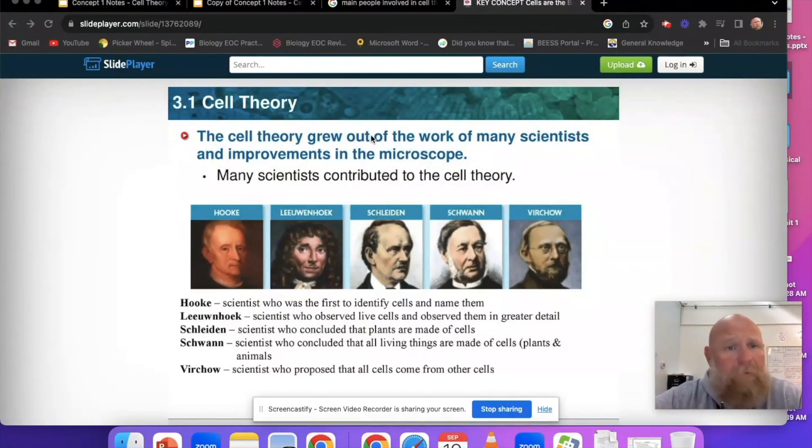The cell theory grew out of the work of many scientists. It built upon the work of various scientists, and specifically it was centered around the improvement of the microscope. The microscope had yet to be developed at this point.